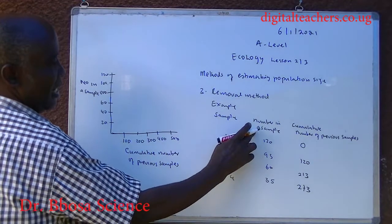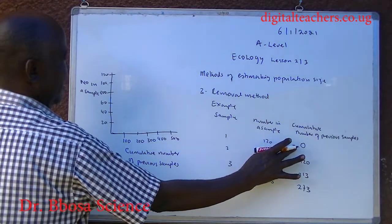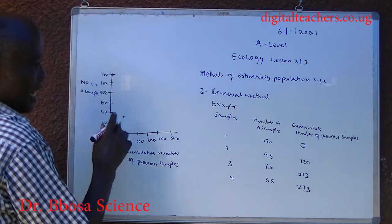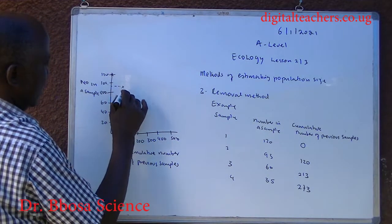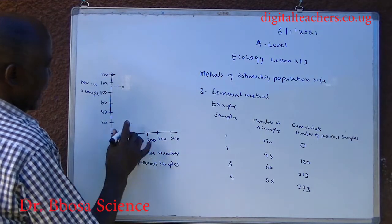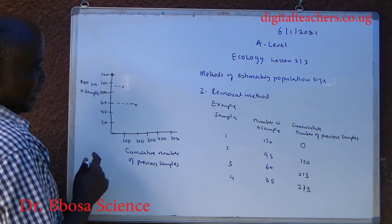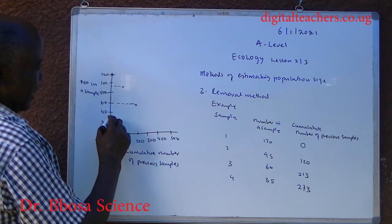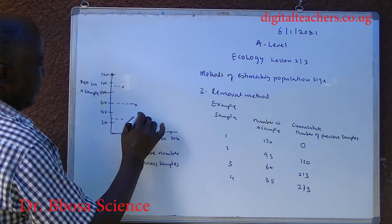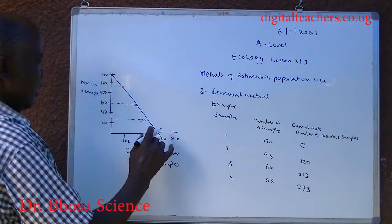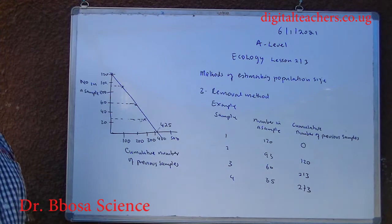When we plot the number in a sample against the cumulative number of samples: 120 is plotted against 0; 93 is plotted against 120; 60 is plotted against 213; 35 is plotted against 270. When we extrapolate this graph to zero, the population size is approximately 425.